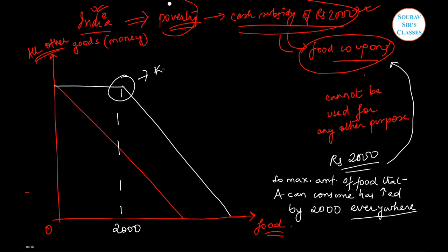We have a kinked budget line. What happens is that this was the earlier intercept of food, and there has been an increase. But the intercept of all other goods axis remains unchanged.